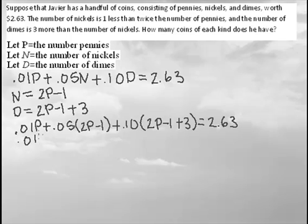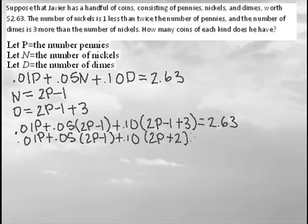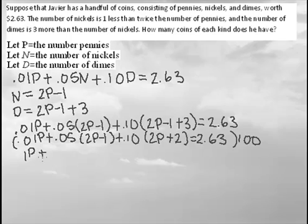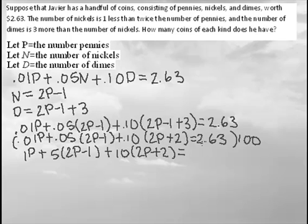Let's combine the like terms inside the parentheses: negative 1 plus 3 is 2. Now we can get rid of the decimals by multiplying the whole equation by 100. So 0.01 times 100 is 1, 0.05 times 100 is 5, 0.10 times 100 is 10, and 2.63 times 100 is 263.